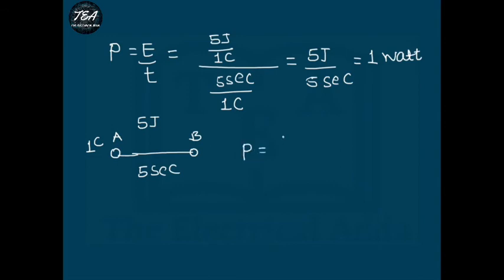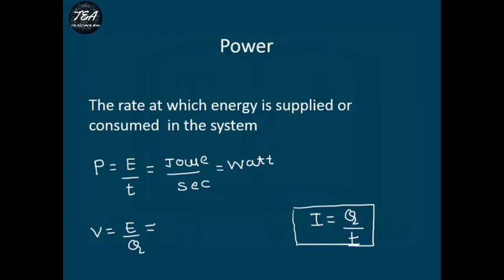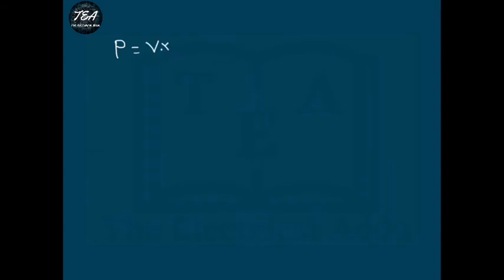Let's generalize: if we require E joules of energy to move Q coulombs of charge in T seconds, then P = E/T, which can be rewritten as (E/Q) × (Q/T). Since E/Q is voltage (V) and Q/T is current (I), we get the fundamental relationship: P = V × I. Power is the product of voltage and current.